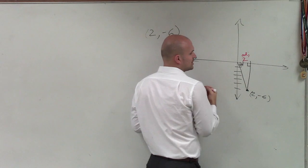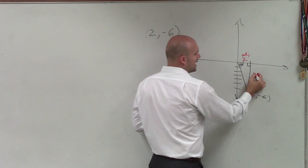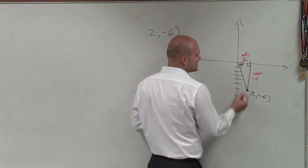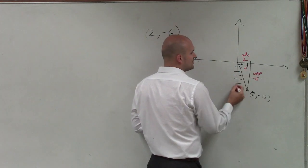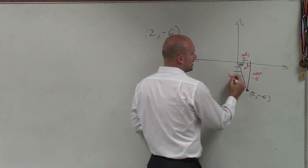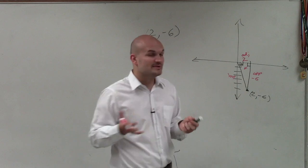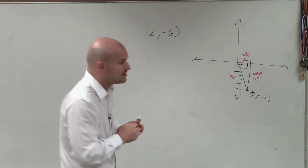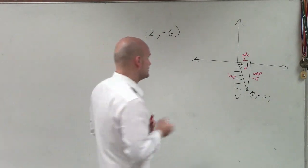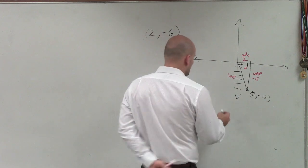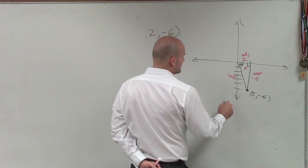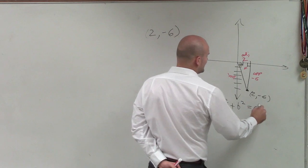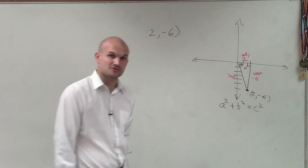Directly across from our theta is what we call the opposite side, and the length of our opposite side is negative 6. Directly across from the 90-degree angle is our hypotenuse. In this case, we don't know the length of the hypotenuse, so to solve that with the right triangle we're going to use the Pythagorean theorem. Remember, the Pythagorean theorem says if you have your two legs, a squared plus b squared, that equals the length of your hypotenuse squared.